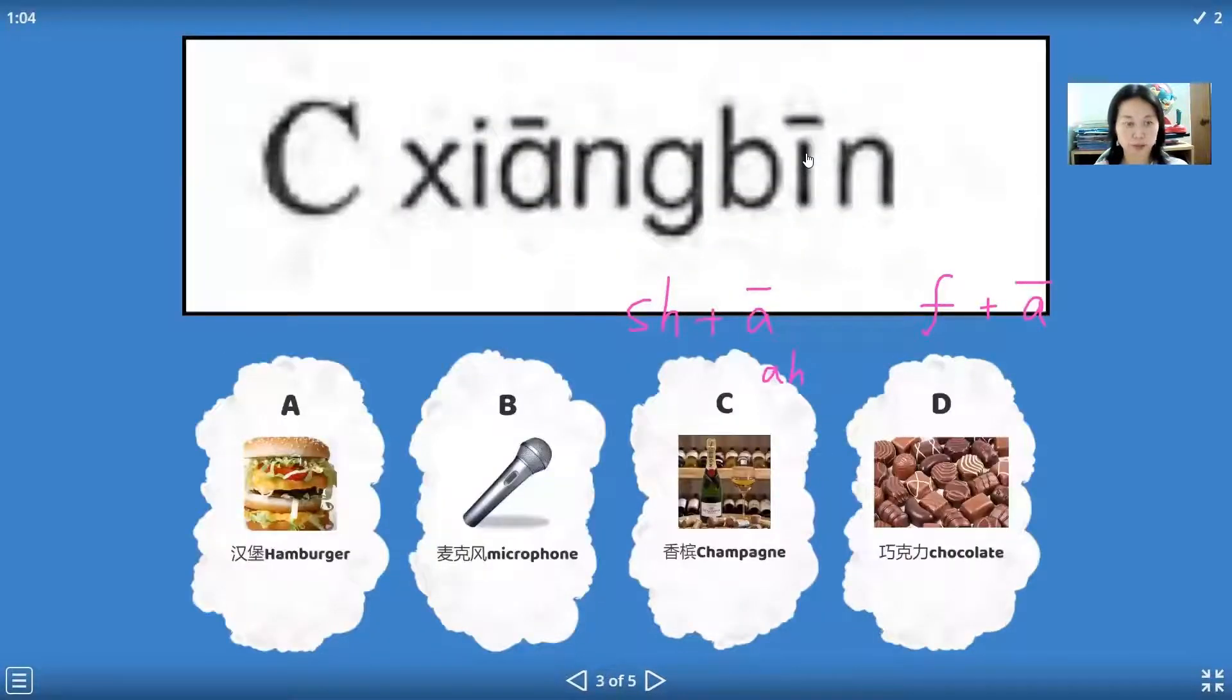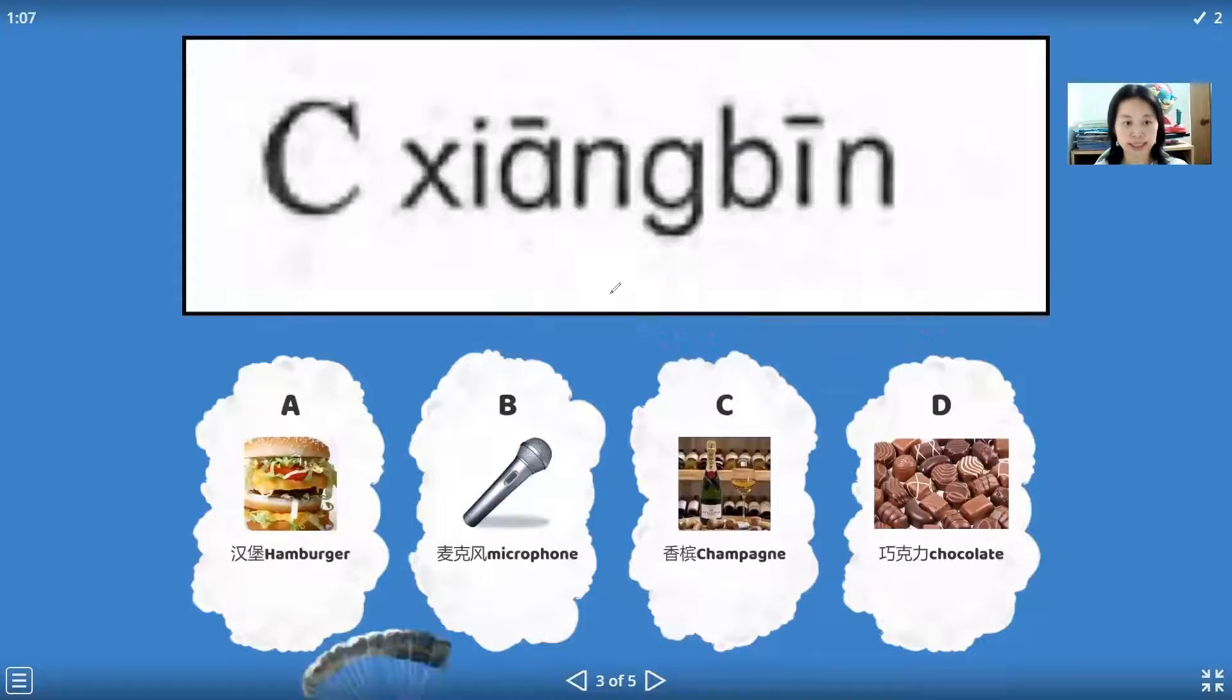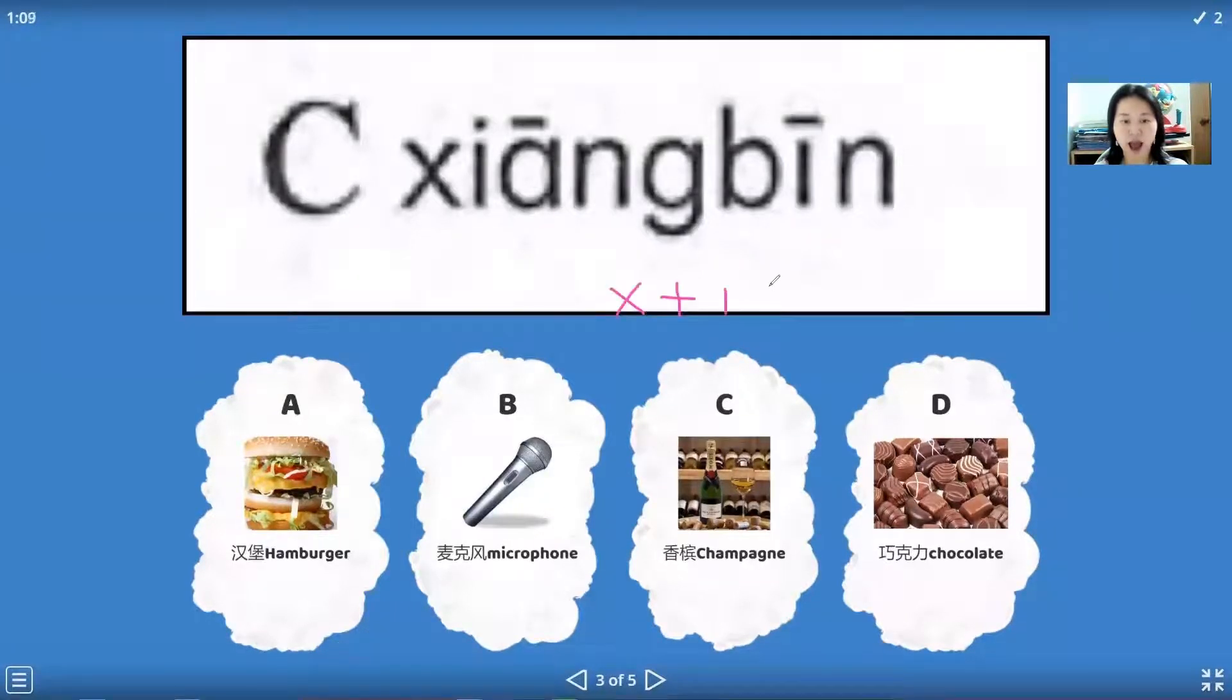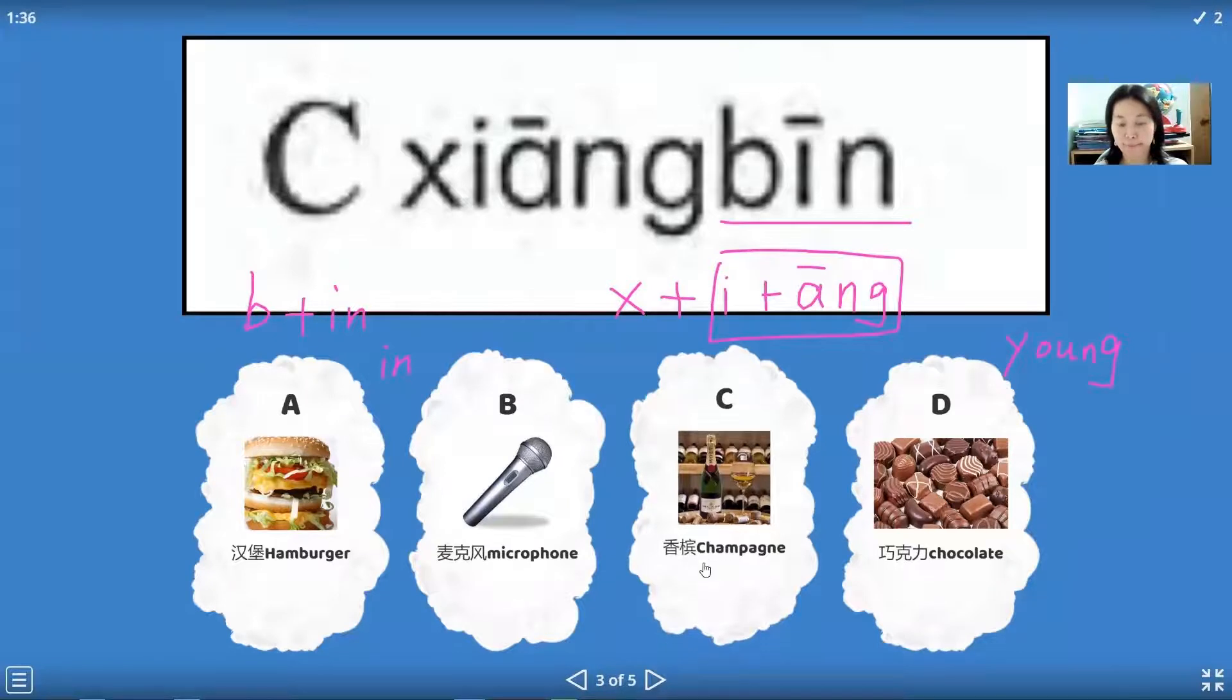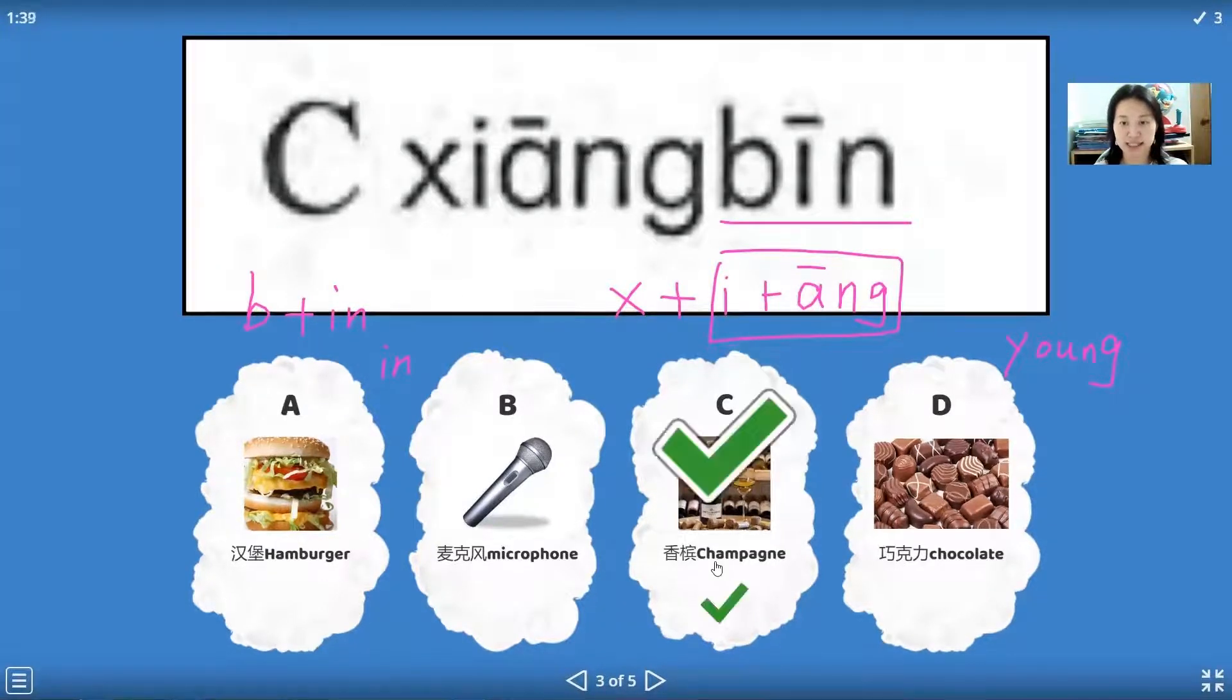And this one, we just say xi, i, ang. And this is iang, this pronunciation just similar like English yang. We say xi yang, xiang. And this one is fo, yin. This yin is just like English yin, in school we say yin. Fo yin, bin. This word we say xiangbin. Xi is xiangbin.